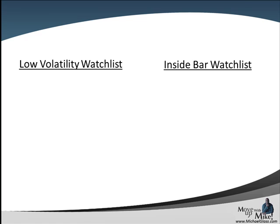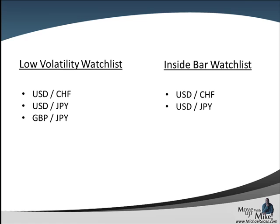One of the things we saw from Friday is indecision and parity, and so we do have a couple of candidates for our low volatility inside bar watch list. We're going to watch the dollar franc, the dollar yen, and the pound yen. And on the inside bar watch, we're also going to be watching the dollar franc, the dollar yen, and the pound yen.